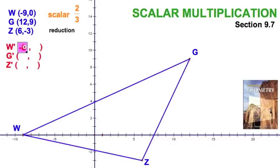Now let's do our calculations. 2/3 of -9, -6. 2/3 of 0, 0 gives us the coordinates of W prime right there. And again, 2/3 of 12, 9. 2/3 of 9 would be 6, giving coordinates of G prime. 2/3 of 6, 4. 2/3 of -3 would be -2. We can plot our Z prime.